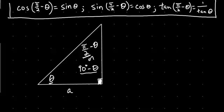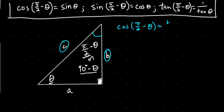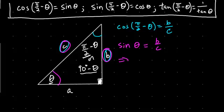Let's look at the cosine of pi over two minus theta. We're looking at that angle, so the cosine is adjacent over hypotenuse, which equals B over C. Now the sine of theta from angle theta is opposite over hypotenuse, which is also B over C. So that implies that cosine of pi over two minus theta equals sine theta.